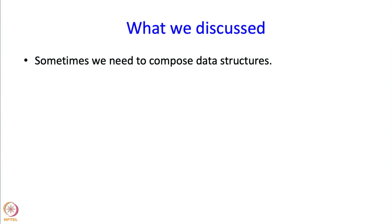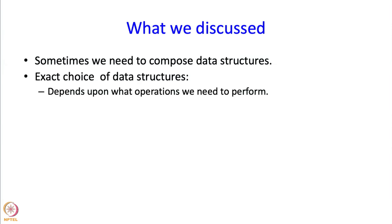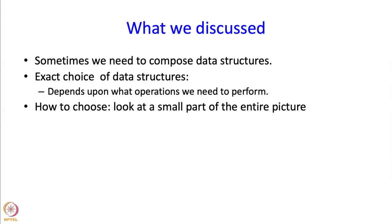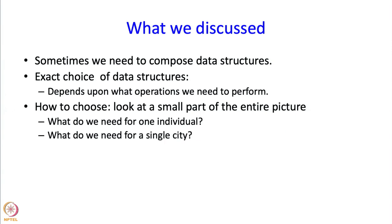So what did we discuss? We discussed that sometimes we need to compose data structures. The exact choice depends on what information we want to store, but also on what operations we need to perform on that information. We also discussed how to do this composition: look at a small part of the entire picture and build it up — what do we need for one individual, for a single city, and therefore what do we need for all individuals or all cities together. Next I am going to talk about something called a typedef, but before that let me take a quick break.